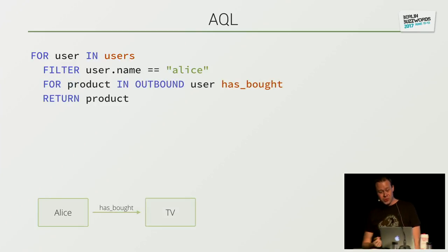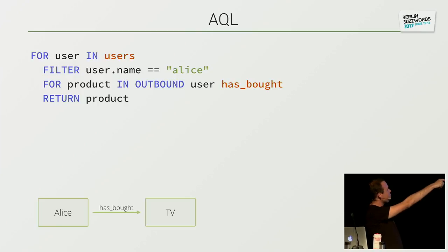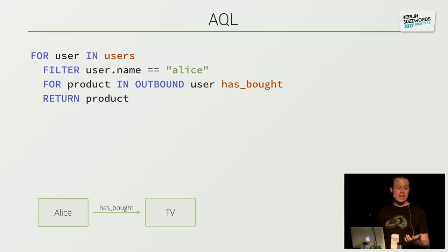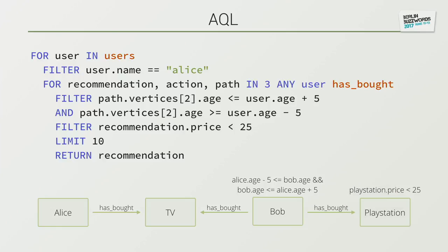I promised you graph queries. Now we have a starting point which is Alice, or all Alices that we can find. For all products, in one outbound step starting at this user, using the relation hasBought — I find all the products that Alice hasBought. And I can make it very complex. For my recommendation, using the last edge as action and the entire path in three steps, ignoring the direction. Filter that the second vertex on the path has an age attribute which is less than my age plus 5 and greater than my age minus 5 — about the same age as I am. And the recommendation price should be less than 25. And thereby I already have a simple recommendation query running inside my graph database.